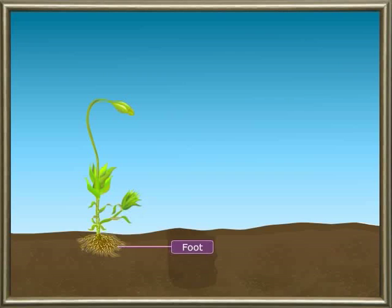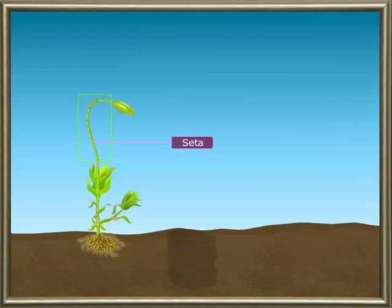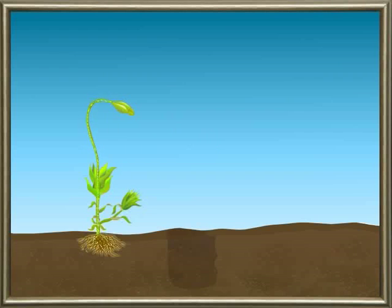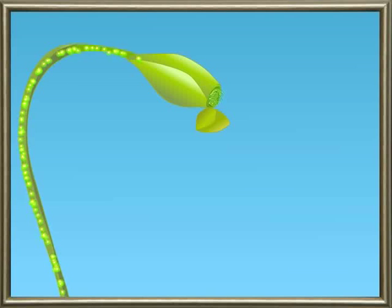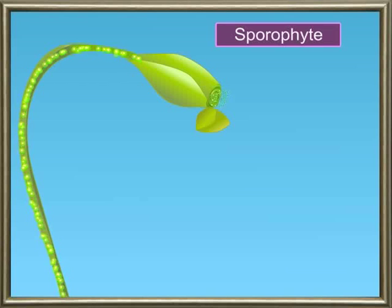The foot is embedded in the ground and absorbs food from it. The seta connects the capsule to the plant body and conducts food from the foot to the capsule. The capsule produces a large number of tiny spores. This part of the plant is called the sporophyte.